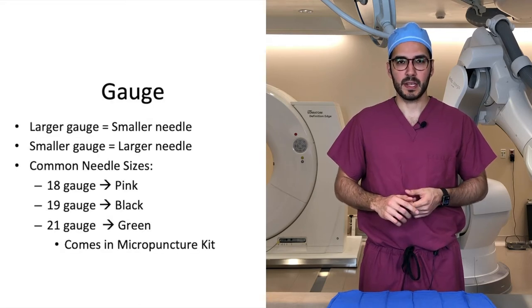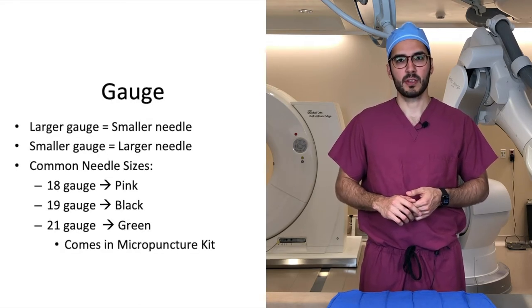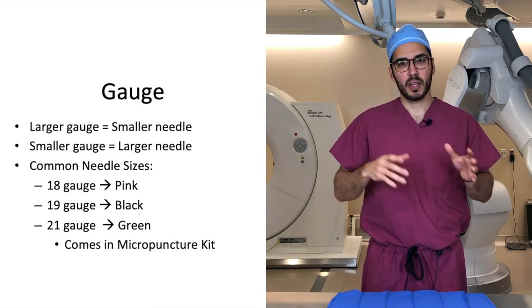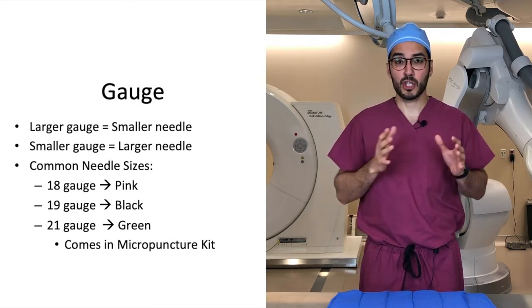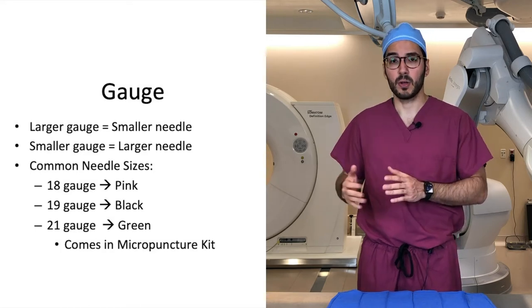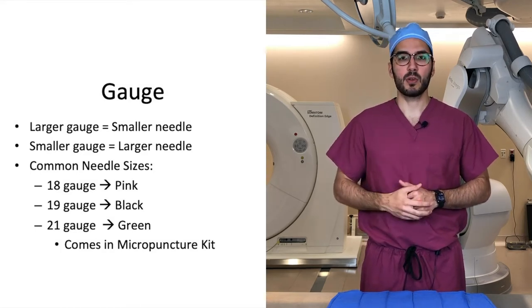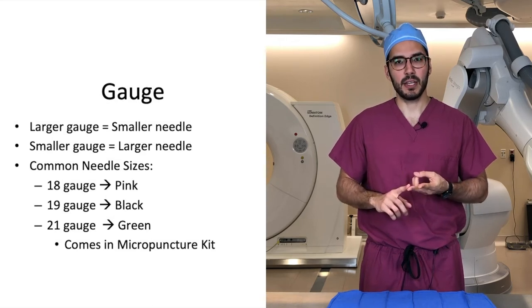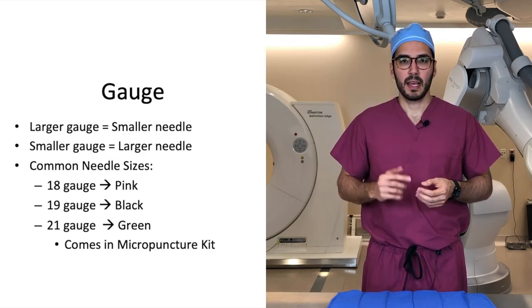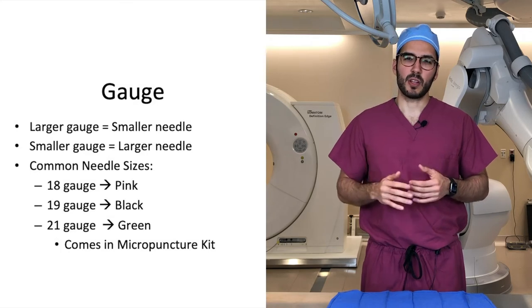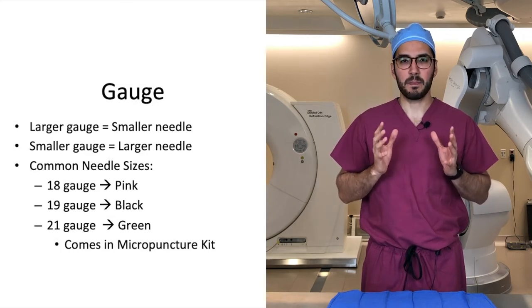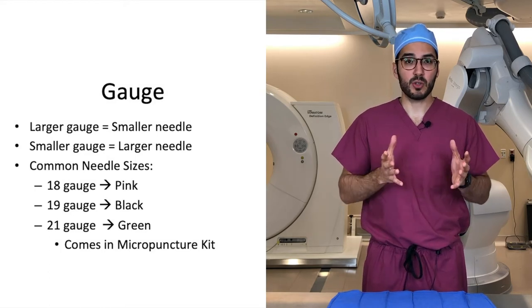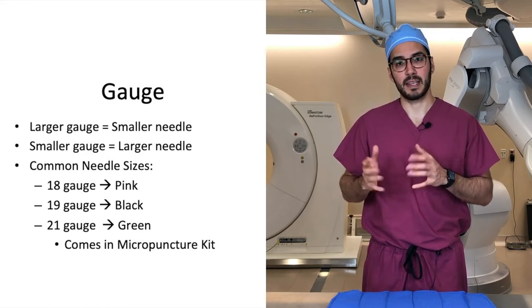Gauge describes the outer diameter of needles. This system is counterintuitive in the sense that the bigger the gauge, the smaller the needle, and the smaller the gauge, the bigger the needle. Three common needle sizes used in IR are the 18-gauge, 19-gauge, and 21-gauge needles, and they come in standard colors. 18-gauge oftentimes comes in pink, whereas 21-gauge needles come in green. 21-gauge needles actually come in the micro-access kit.